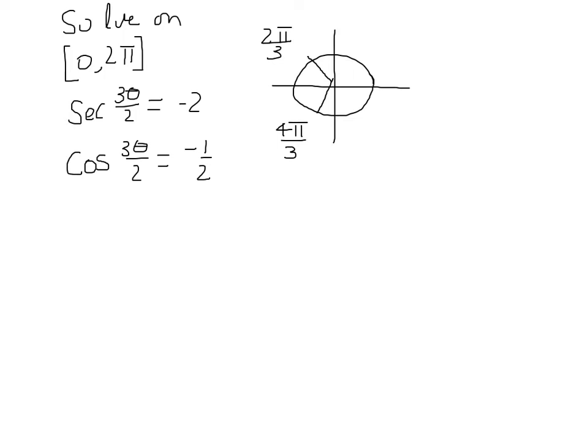Now, that means then that 3 theta over 2 would be equal to 2 pi over 3. But we're solving for theta, so what we would want to do at this point is multiply both sides by 2 thirds to solve for theta. And so we'd find theta equal to 4 pi over 9.